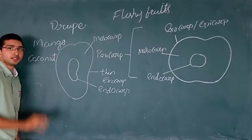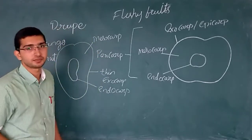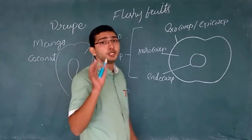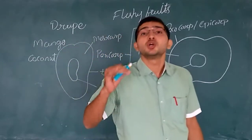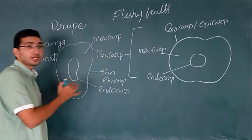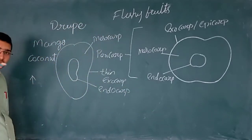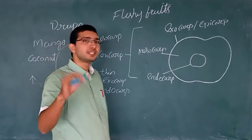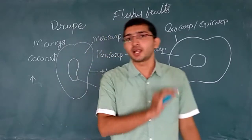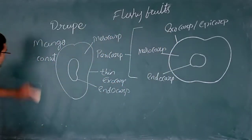The third type is the hesperidium. One important thing about the drupe: in the drupe, the ovary is superior in nature. The drupe is also monocarpellary. Now let's discuss the hesperidium.